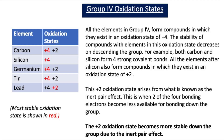In our previous videos, we've learnt that Group 4 elements can either be in the plus 4 oxidation state or plus 2 oxidation state, and the plus 2 oxidation state becomes more stable down Group 4. This is due to the inert pair effect. You can see from this table that carbon has oxidation states of plus 4 and plus 2, and the plus 4 is the most stable oxidation state.